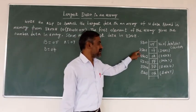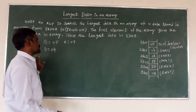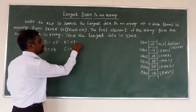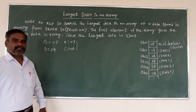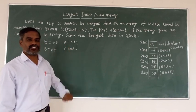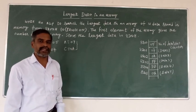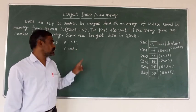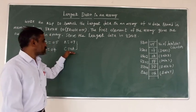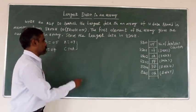Next, increment the memory address to get the second data. The second data is moved to another register - suppose C register. C equals 08. Now we compare these two data to find which is largest. The largest data is always kept in the accumulator to compare with the next data.